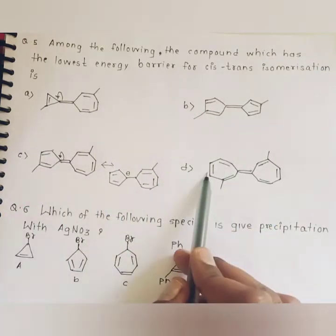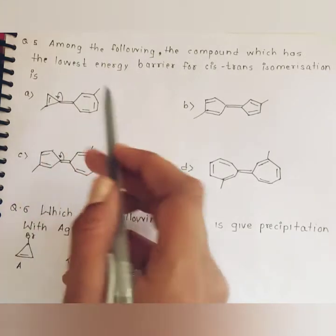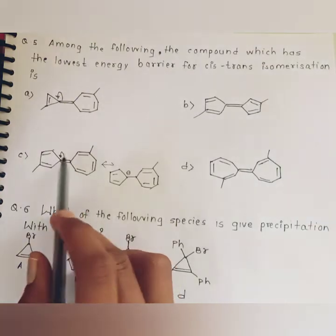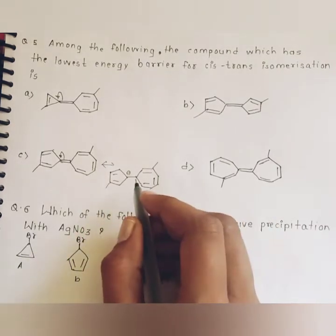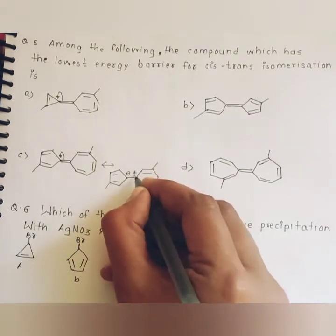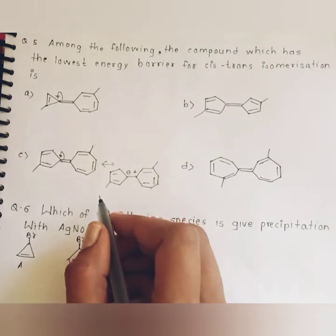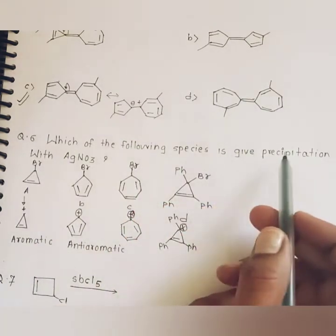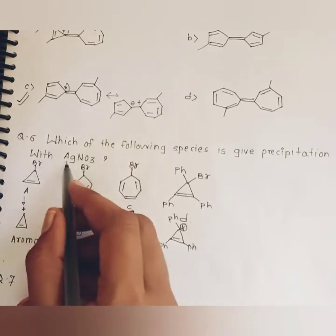The next part of question five: among the following, the compound which has the lowest energy barrier for cis-trans isomerization. The delocalization of the common double bond in compounds A, B, and D results in the anti-aromatization of one of the rings. However, in compound C, when we delocalize the common double bond, it results in the aromatization of both rings. Therefore, this leads to the formation of a single bond, giving it the lowest energy barrier for cis-trans isomerization.